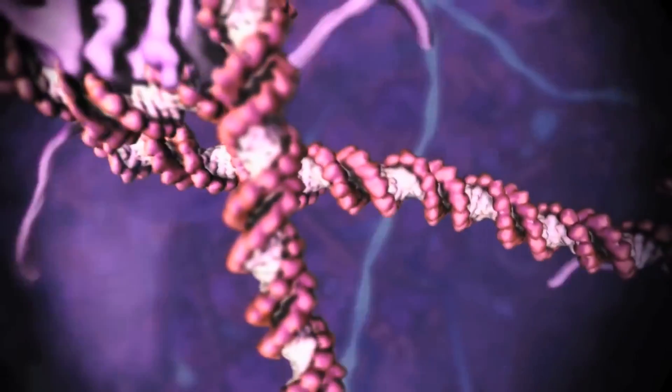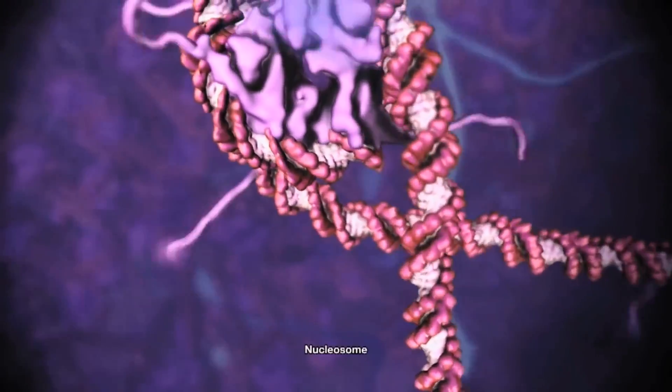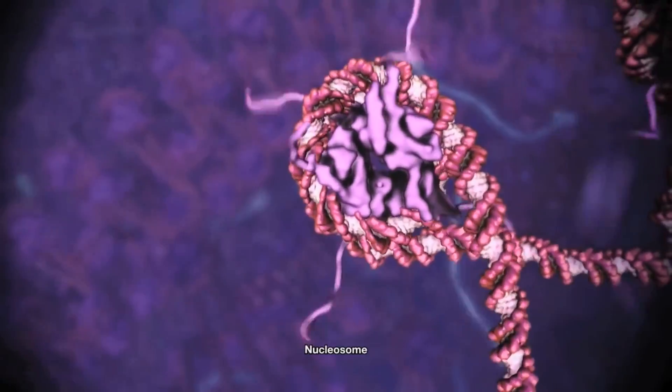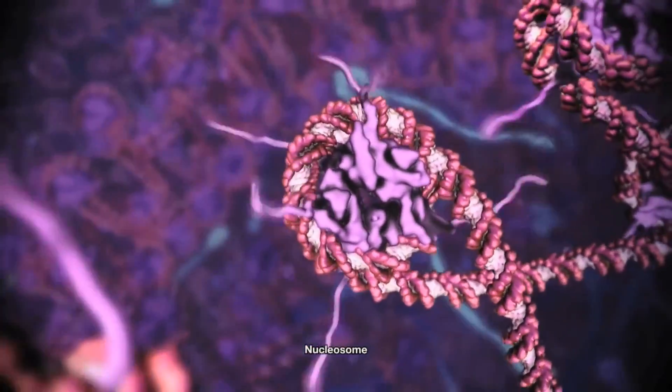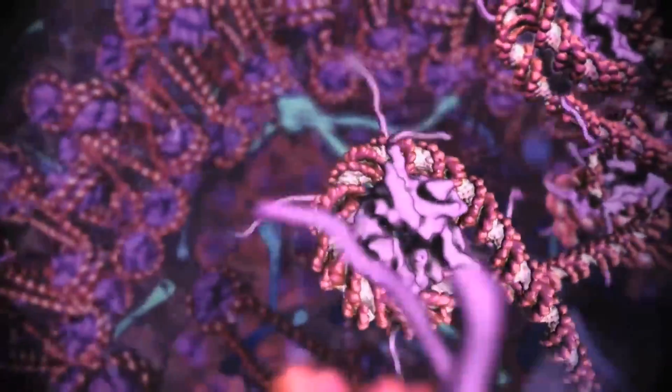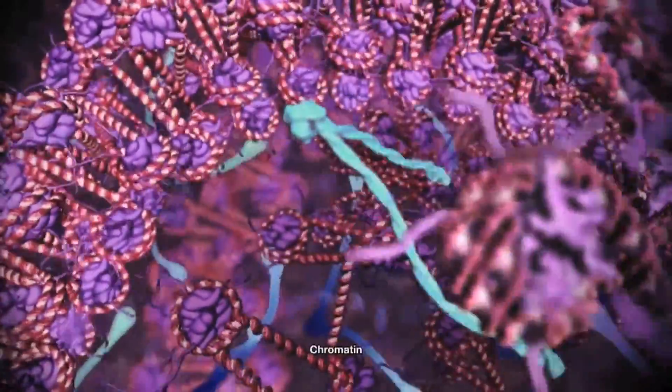To keep DNA organized and regulate access to the genetic code, it is wrapped around structural proteins to form nucleosomes, which are then further organized into fibers called chromatin.